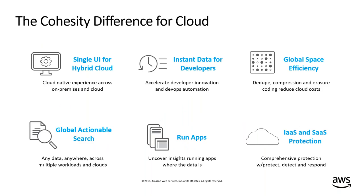To summarize the key points Cohesity delivers for customers running in the cloud: first, a single pane of glass GUI for your hybrid cloud environment, giving you the same view into your data across on-premises and cloud. For developers and cloud-native environments, we provide instant data so they can innovate faster and DevOps can automate better — iterating fast, learning fast, and deploying faster.